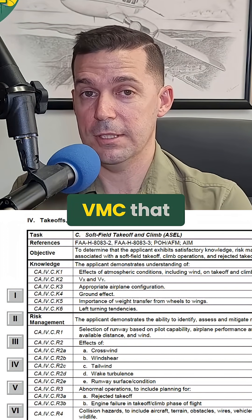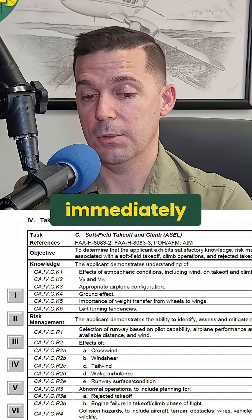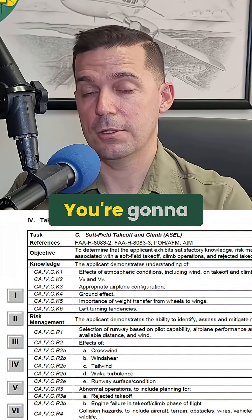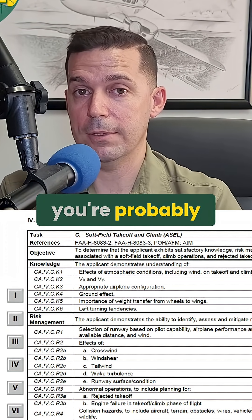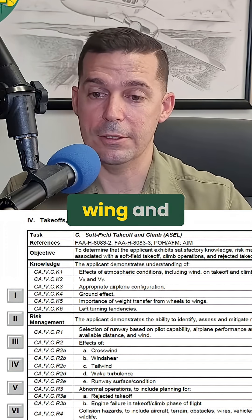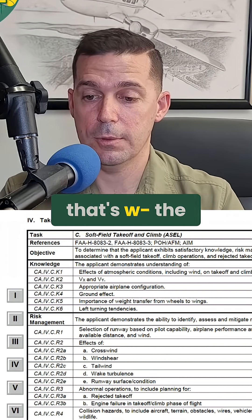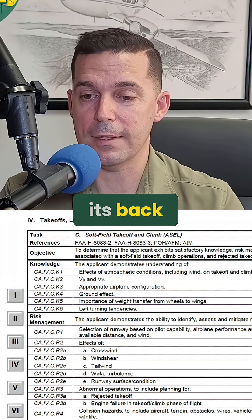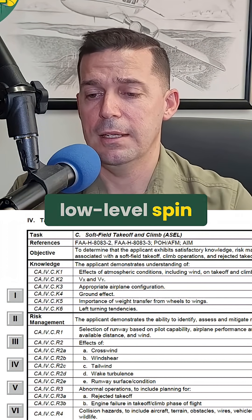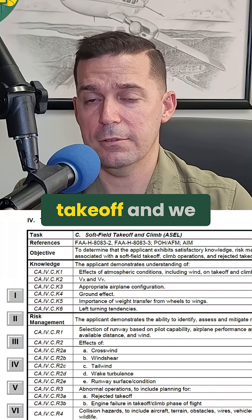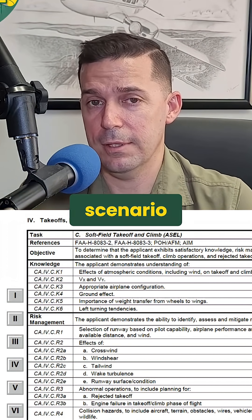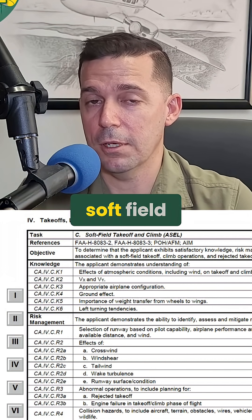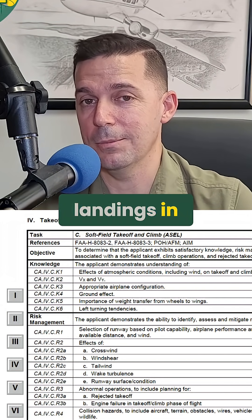If you lose an engine at 50 knots, you're so far below VMC that you're immediately going to go into a really hard yaw toward that dead engine. You're going to try to correct with aileron, and you're probably going to stall the dead engine wing and spin. That's the videos you see of the twin taking off and immediately rolling over on its back — that's just a low-level spin. If we do a soft field takeoff and get into that scenario, it opens us up for a very bad outcome. So we don't do soft field takeoffs or landings in a multi-engine airplane.